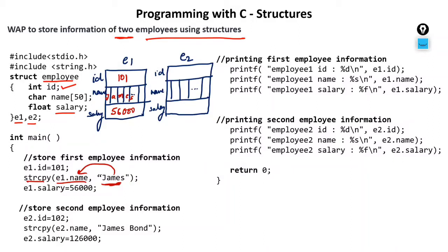Now store the second employee information. The second employee is represented by variable e2. So e2.id will become 102. Then, using strcpy, we copy 'James Bond' into e2.name. And e2.salary is 126,000.